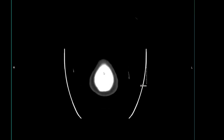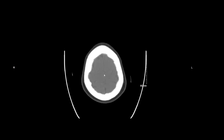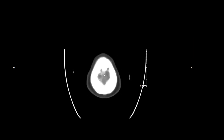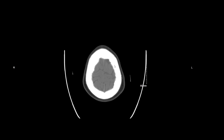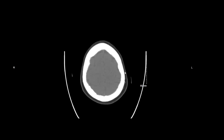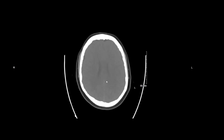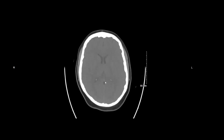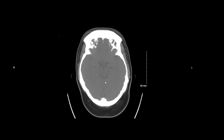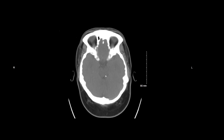The soft tissue window I'm using is a window of 400 and a level of 50. I'm then going to assess the scalp for any hematomas, any lacerations, any nodules or masses. I'm going to proceed inferiorly, looking at the temporalis muscles for symmetry.